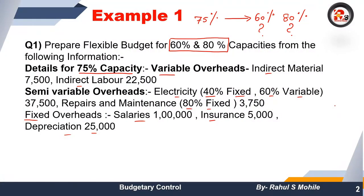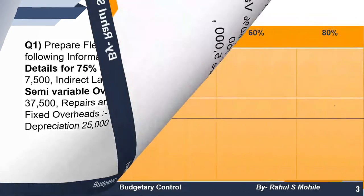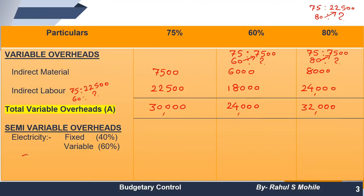The second part is semi-variable overheads — partly fixed and partly variable. We have electricity given at 40% fixed and 60% variable, with an amount of 37,500 at 75% capacity. To split: 37,500 × 40% = 15,000 fixed; 37,500 × 60% = 22,500 variable. The fixed portion — 15,000 — remains the same at all capacity levels.